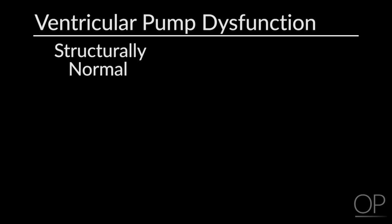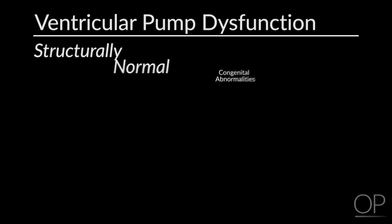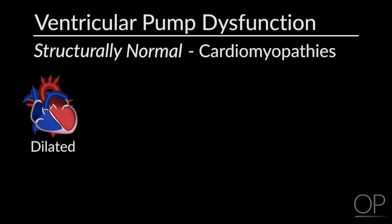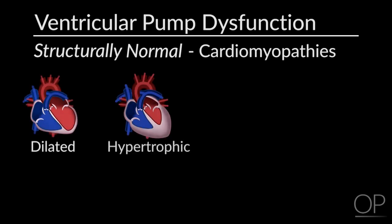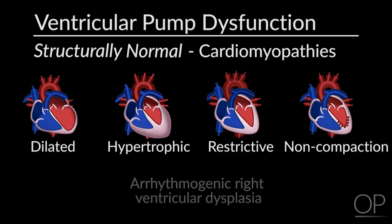Starting with ventricular pump dysfunction, we categorize it into structurally normal hearts and congenital abnormality of hearts. In structurally normal hearts, we have cardiomyopathies, of which there are dilated, hypertrophic, restrictive, non-compaction, and arrhythmogenic right ventricular dysplasia.